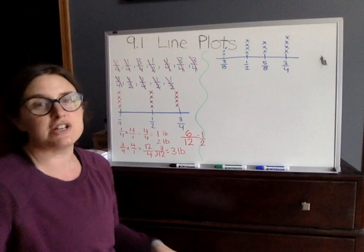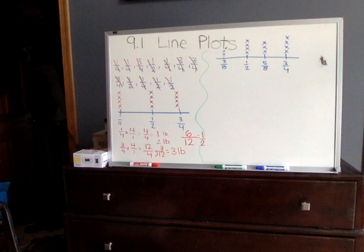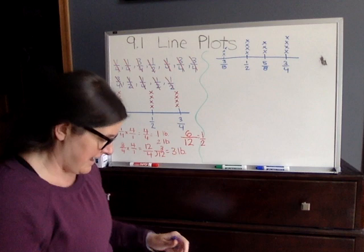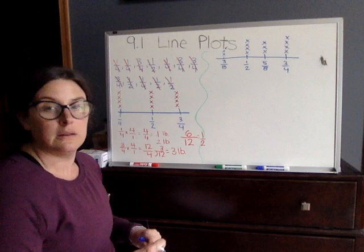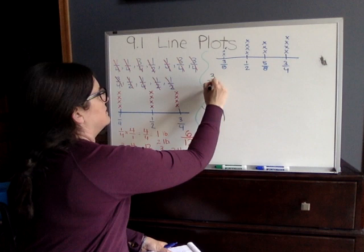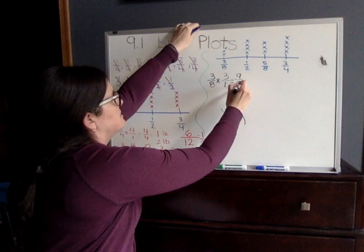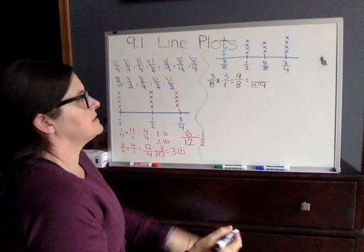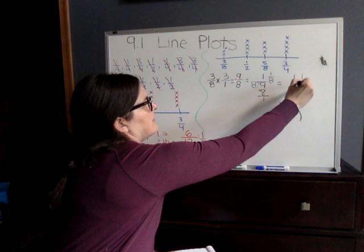You go through your fractions and multiply by the number of crystals you have. Starting with three eighths, we multiply three eighths times three (three over one). Three times three is nine, over eight — that's nine eighths. Converting to a mixed number: eight into nine goes one time with one remainder, so that gives us one and one eighth as our total.